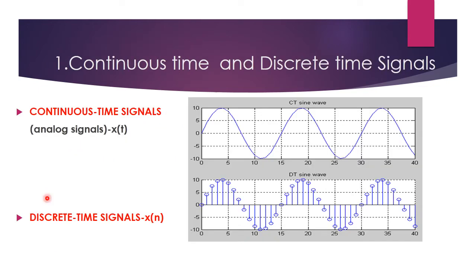First, we are going to see continuous time and discrete time signals. Continuous time means the signal varies continuously with respect to time — at each and every interval of time, we will have a magnitude. But in the case of a discrete time signal, only at discrete intervals will we get the magnitude. For example, at zero, two, four and so on we have values, but in between zero and two we won't have any values — the value is equal to zero.